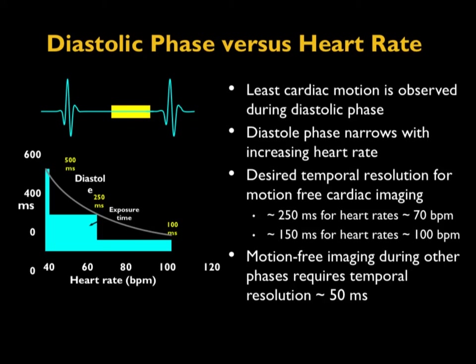The diastolic phase is more feasible for cardiac imaging because the least cardiac motion is observed during this phase compared to the systolic phase. The diastolic phase also narrows with increasing heart rate, which is one reason why in cardiac imaging we want the heart rate to be as stable and as slow as possible, allowing for a longer diastolic phase.